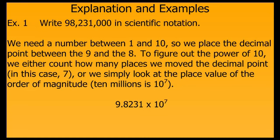Alternatively, if we know our place values, we simply look at the place value of the order of magnitude, and that tells us the power of 10. Using either of these methods, we get 7 — either we move the decimal 7 places from where it currently is, after that last zero, to get it between the 9 and the 8, or we think about the 10 millionths place being 10 to the 7th. So in scientific notation, we write this as 9.8231 times 10 to the 7th.